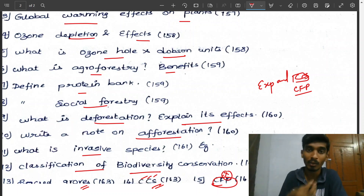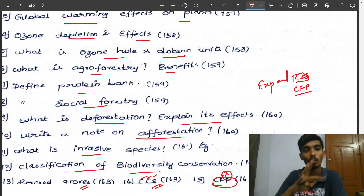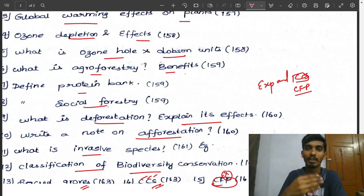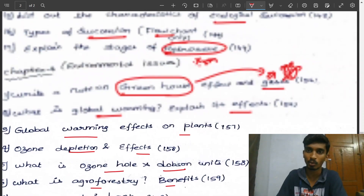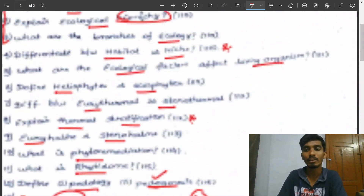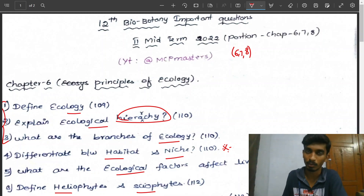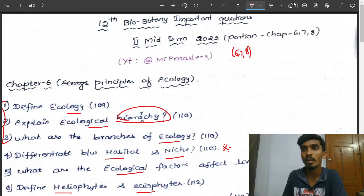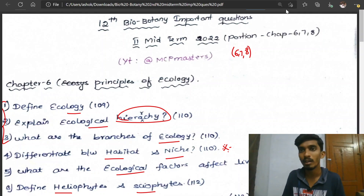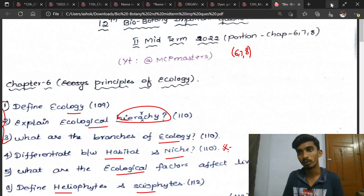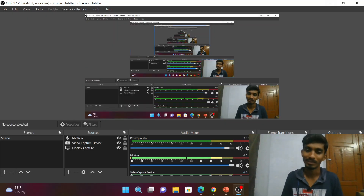What are the ways to reduce carbon footprint? Rainwater harvesting — very important. Geographical Information System (GIS) — these are the most important questions. This chapter is easy to moderate level. First study these questions and then go for other questions. Thank you — next video is on zoology.